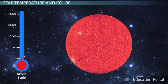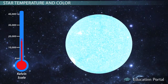If the sun were cooler, it would give off light more in the red range, and if the sun were hotter, it would look more blue.